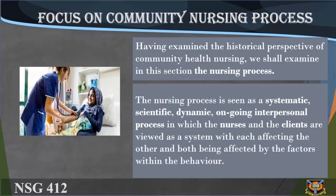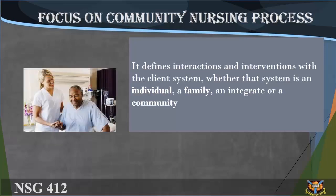Having examined the historical perspective of community health nursing, we shall examine the nursing process, which is seen as a systematic, scientific, dynamic, ongoing, interpersonal process in which the nurses and the clients are viewed as a system with each affecting the other and both being affected by the factors within the behavior. It is a systematic way of determining a client's health status, isolating health concerns and problems, developing plans to remediate them, initiating actions to implement the plan, and finally evaluating the adequacy of the plan in promoting wellness and problem resolution. It defines interactions and interventions with the client system, whether that system is an individual, a family, or a community.